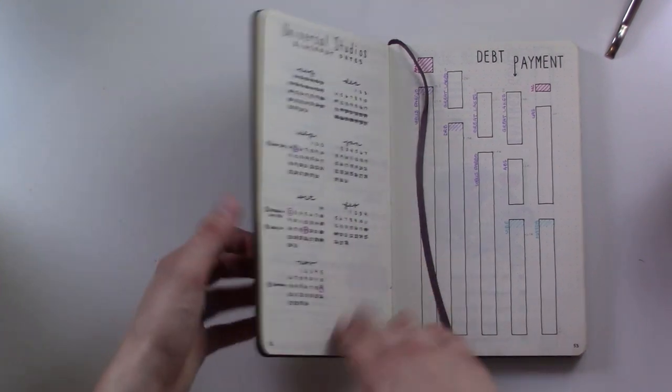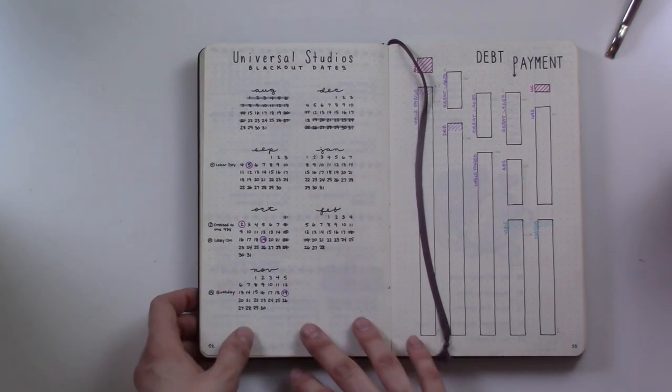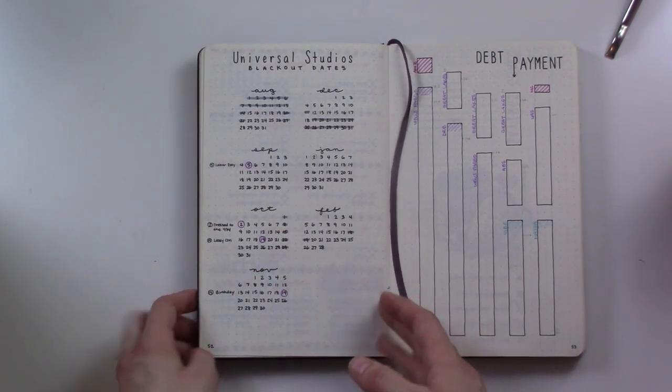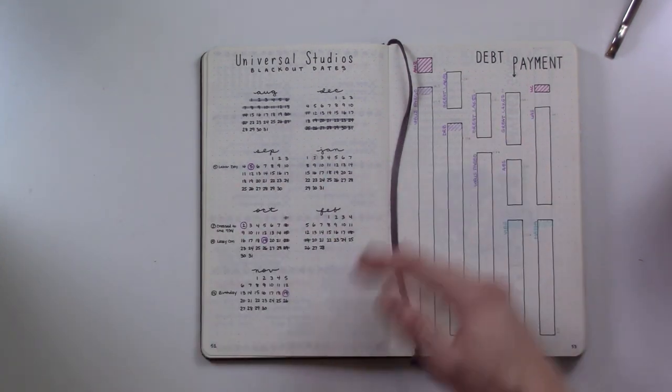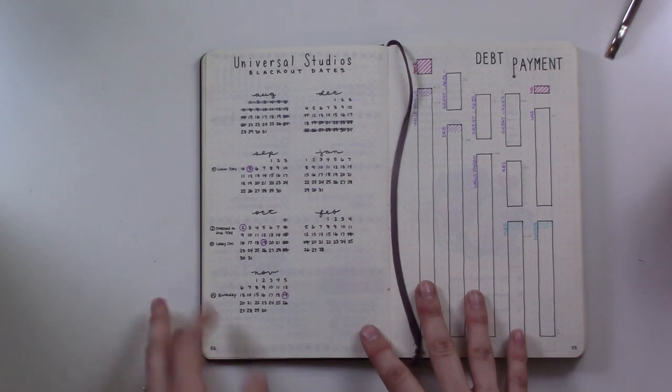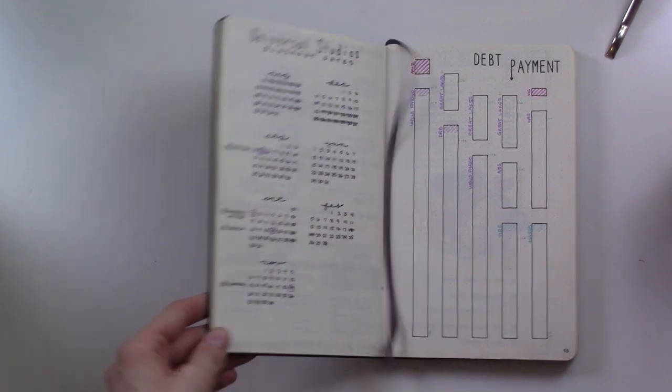I wanted to be able to have this with me without having to pull it up on the internet whenever I wanted to look at my blackout days because there's a lot of different tiers and calendars when it comes to Universal. So this is just a great way to keep track of all that.